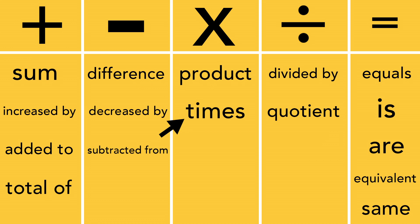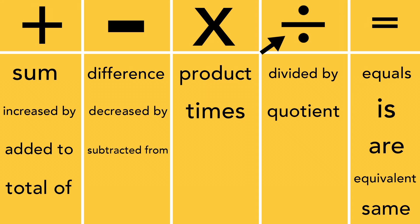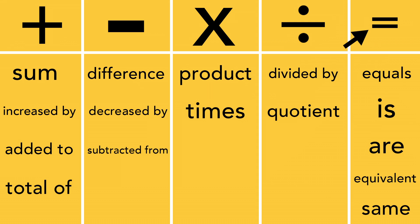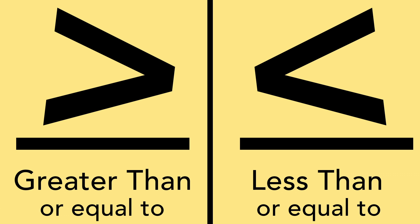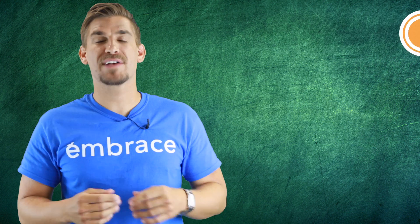The keywords product or times represent multiplication, while the keywords divided by or quotient represent division. The key terms equals, is, are, equivalent, and same are represented by an equal sign. You must also be familiar with the is less than or equal to and is greater than or equal to symbols shown here.